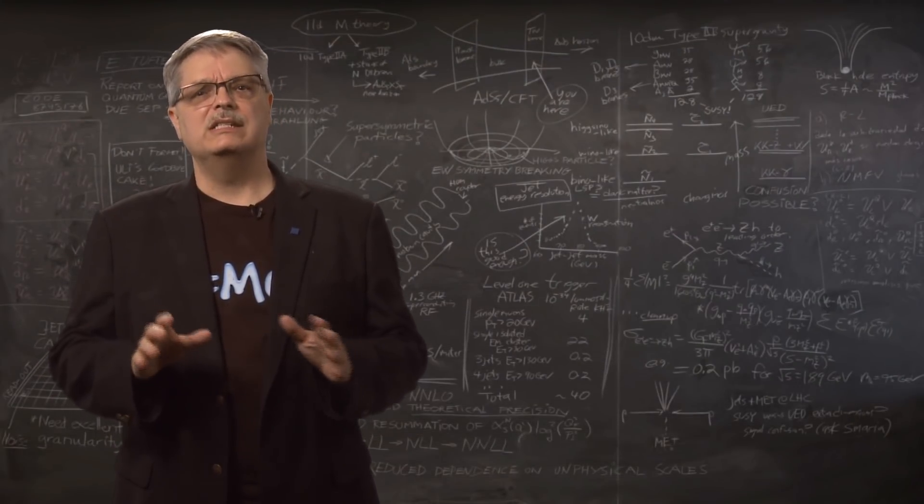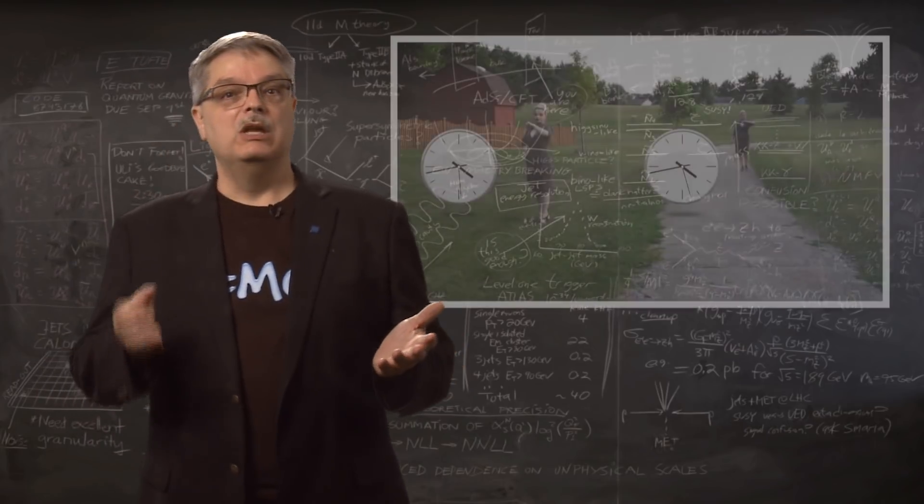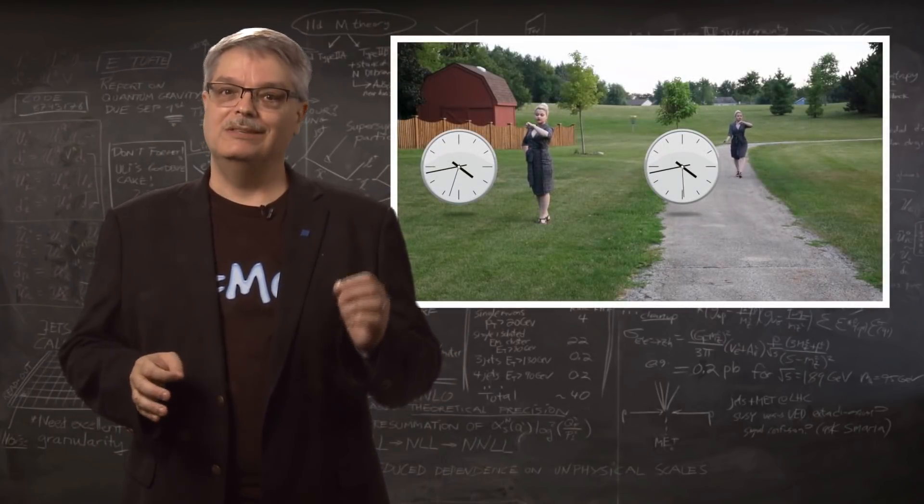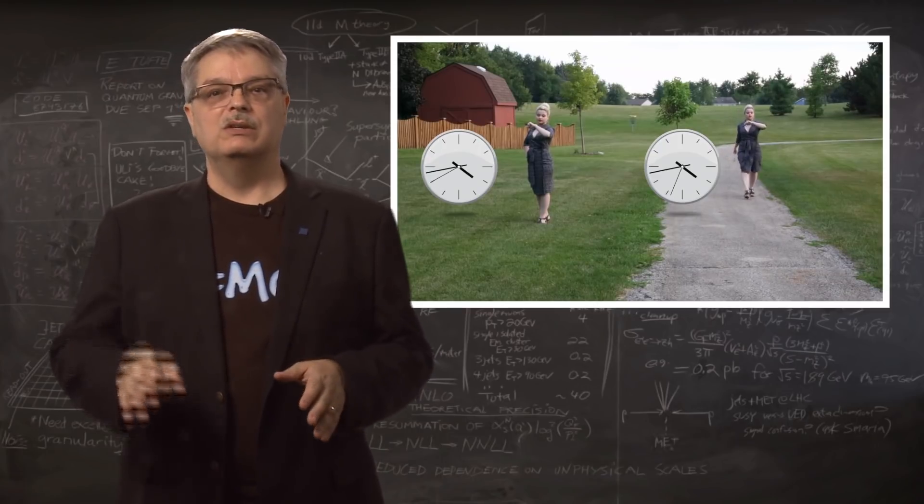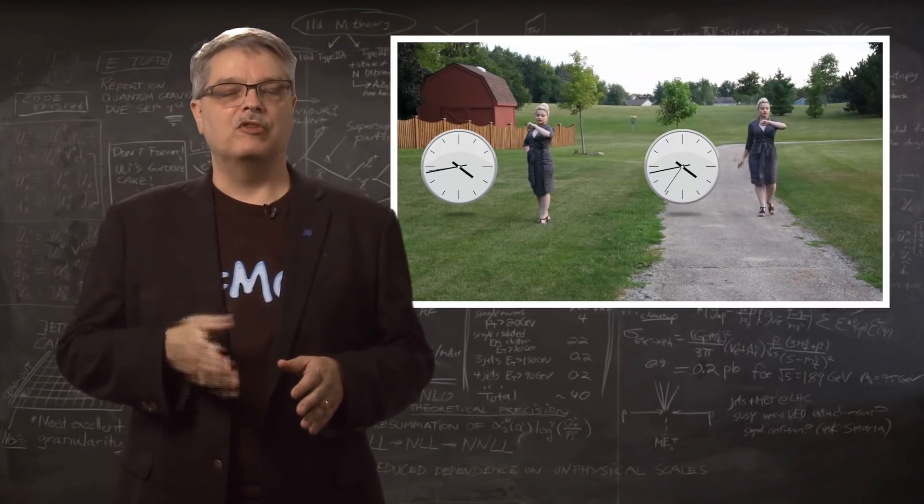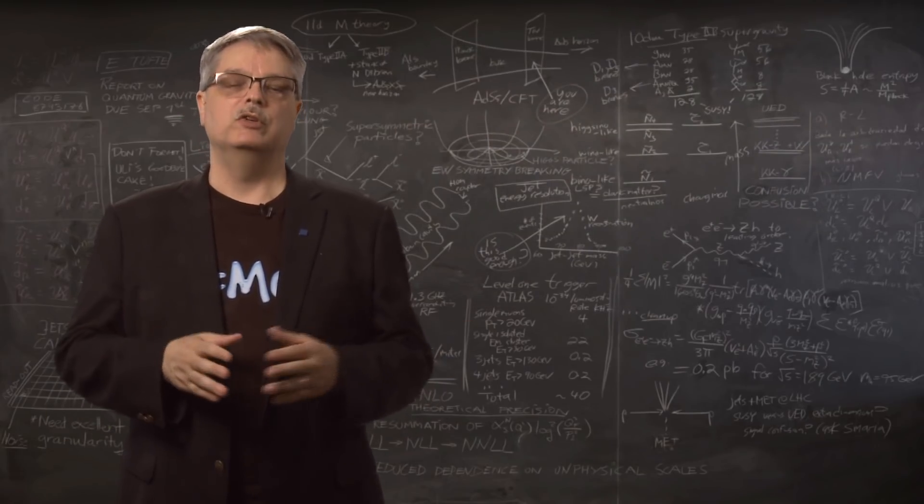So no matter how much Einstein's theory of special relativity bothers you, the data is inarguable. Moving clocks tick more slowly than stationary ones. We demonstrate this every two seconds with every blast of neutrinos sent from Fermilab to distant detectors. There is simply no argument against this irrefutable data.